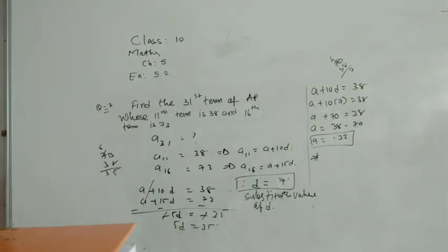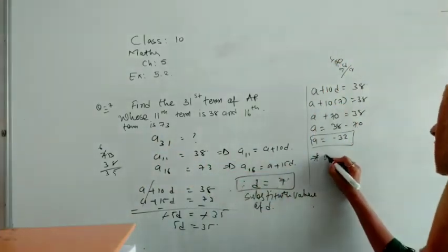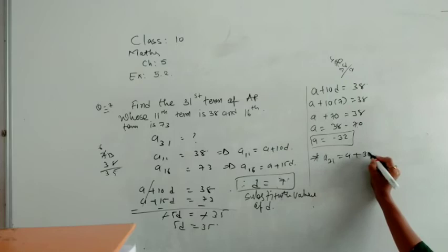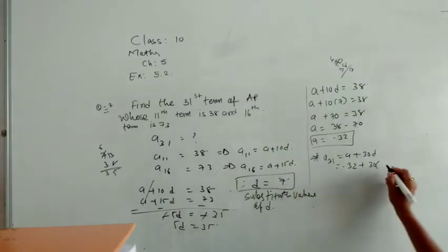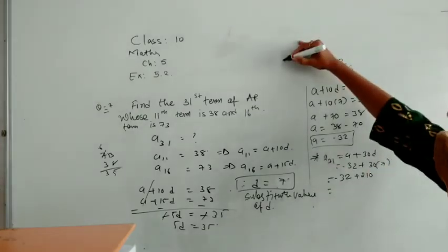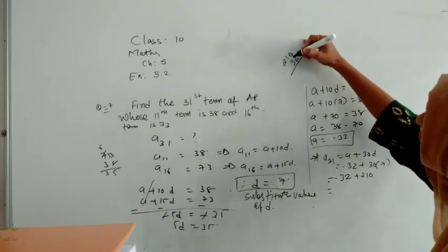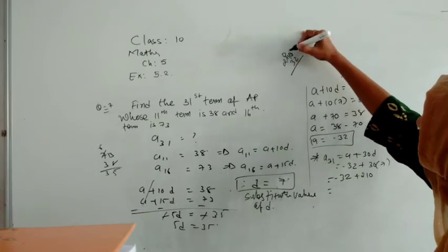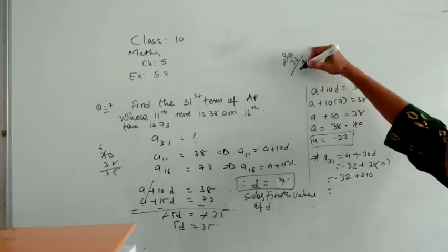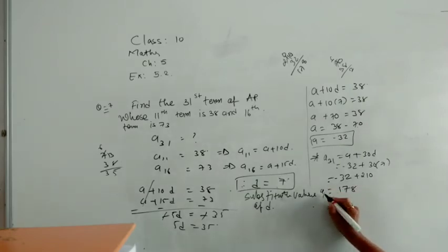Now this is not our aim in the question. Our aim in question comes over here: that is we have to find A31. So A31 will be a plus 30d. So minus 32 we are writing as it is, and d we got as 7. Let us substitute. So 7 thirties are 210 minus 32. Whatever answer you are getting, that is your answer. So subtract it, do it fast. So let us reduce it: 10 and 0, 8 and 20 minus 3 will make 17. 178 is the answer of A31.